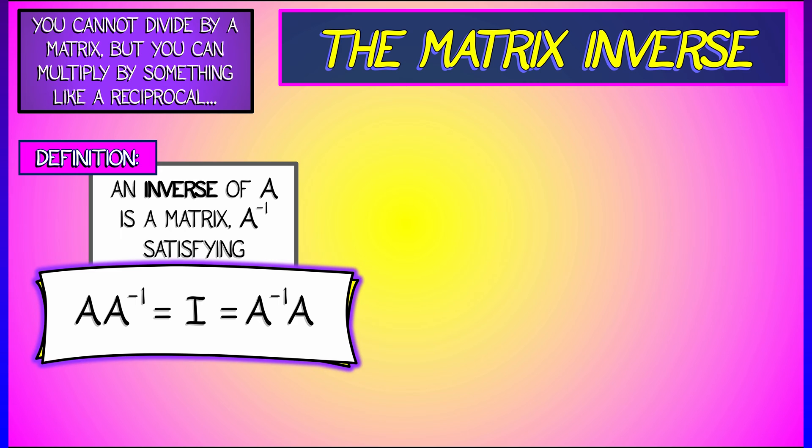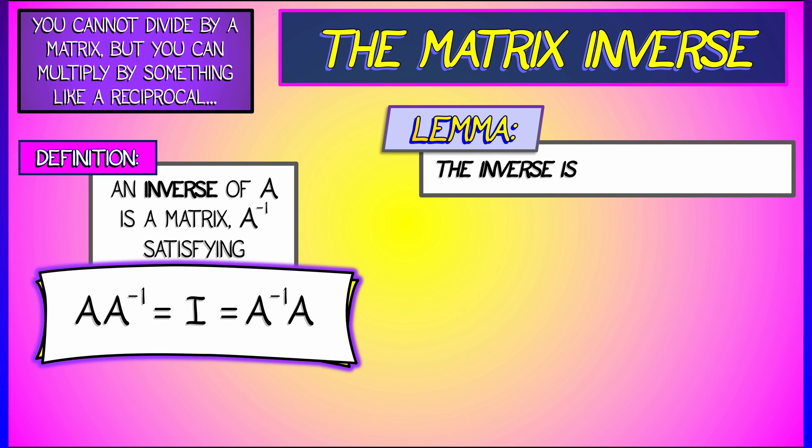What do we do with it? What can we say about this matrix inverse? Well, let's get started with a basic lemma, something where we can get somewhere. First of all, the inverse, if it exists, is unique. There's only one inverse to a matrix, if there are any at all.